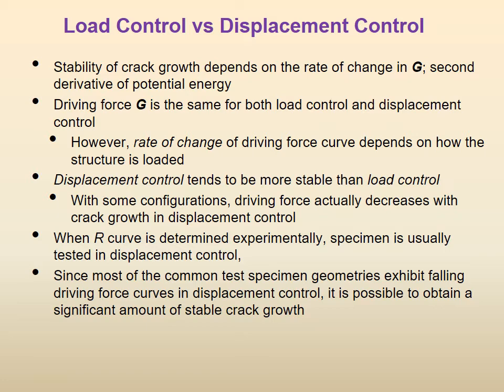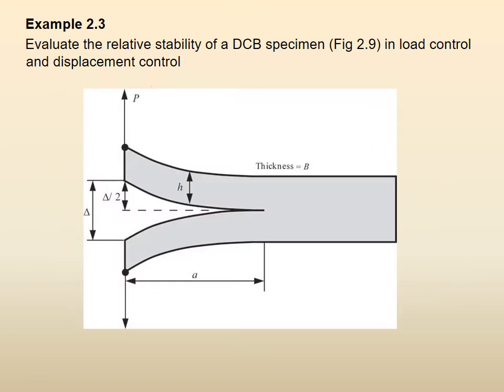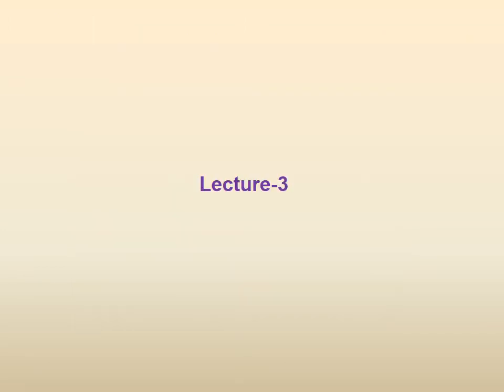We reminded you that in doing tensile experiments and other experiments in the machine, we can either control the load or control the displacement, assigning at which speed the loading will be done. Towards the end of the lecture, we left you with the example of a DCB specimen — the double cantilever beam specimen — and asked you to find the relative stability in load control and in displacement control. We asked you to solve it, not give up, and make sure your solution is totally correct.